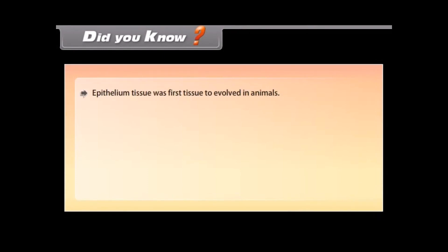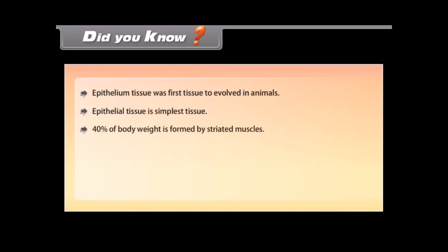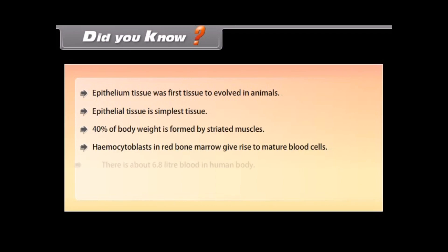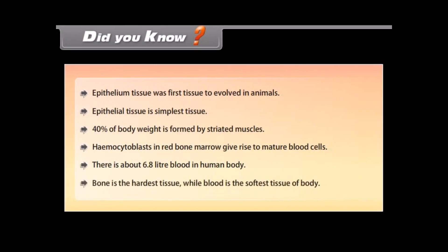Did you know: Epithelial tissue was the first tissue to evolve in animals and is the simplest tissue. 40% of body weight is formed by striated muscles. Hemocytoblasts in red bone marrow give rise to mature blood cells. There is about 6.8 litres of blood in the human body. Bone is the hardest tissue while blood is the softest tissue of the body.